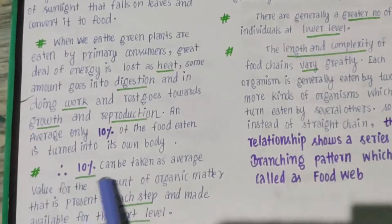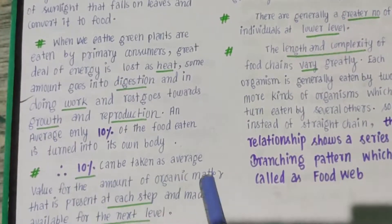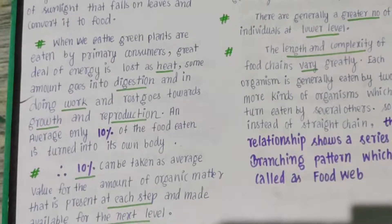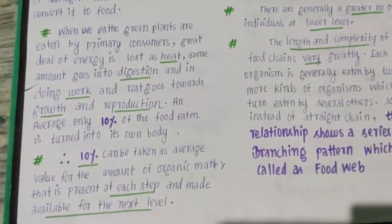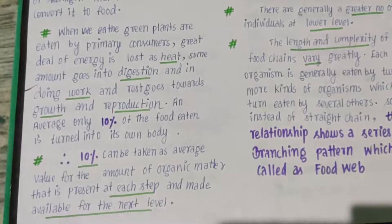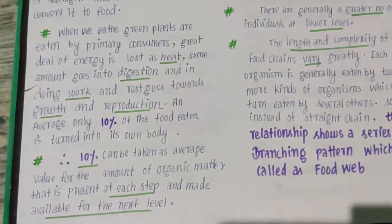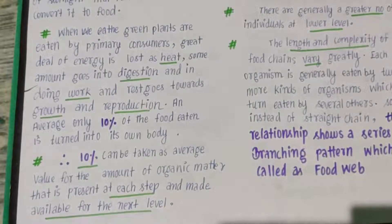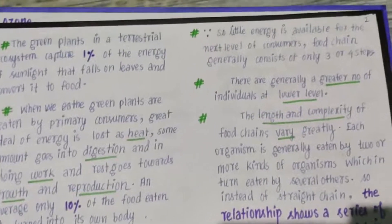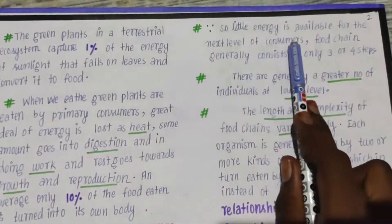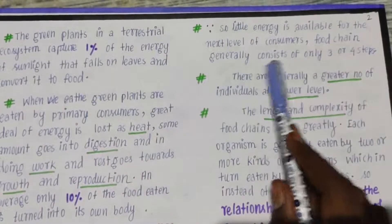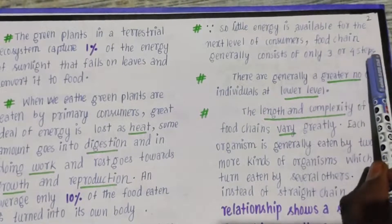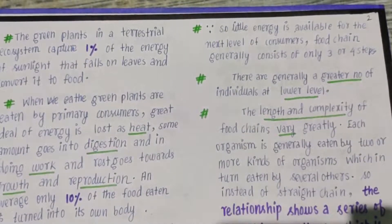Therefore, ten percent can be taken as the average value for the amount of organic matter that is present at each step and made available for the next step — whether from primary consumer to secondary consumer. So little energy is available for the next level of consumer that a food chain generally consists of only three or four steps.